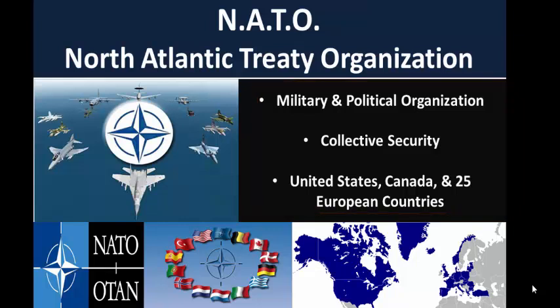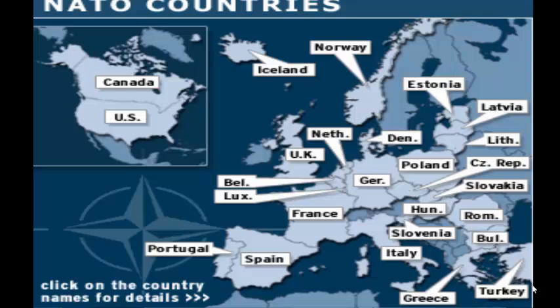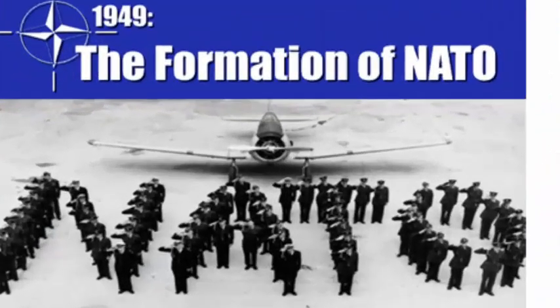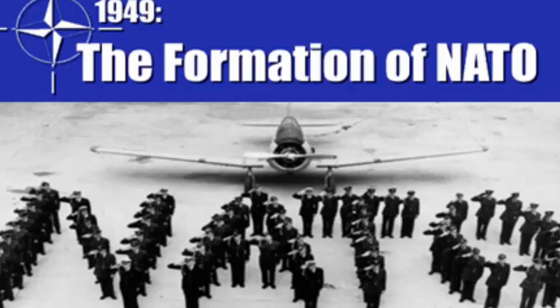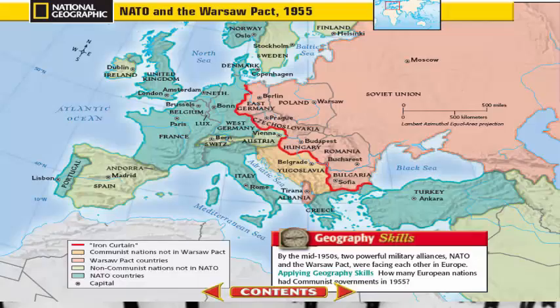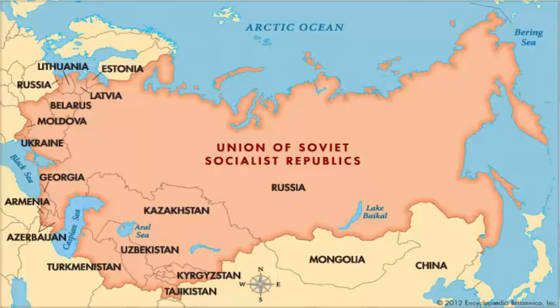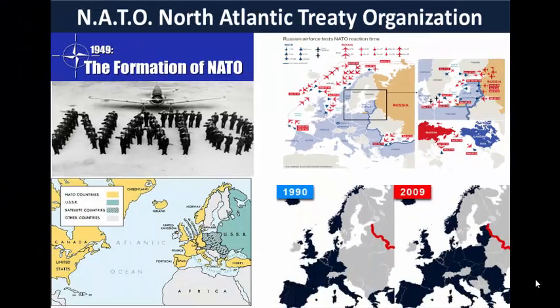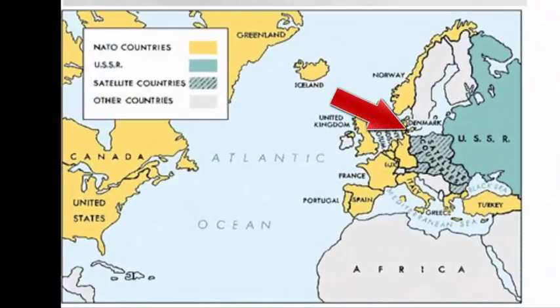We covered NATO in our last video. This treaty and international organization is based on the idea of collective security — the countries basically agree to combine their militaries and announce to the world that if a country messes with one of its members, the others will come to their defense. NATO was created after World War II at the beginning of the Cold War, mostly between the United States and their Western European allies against their new enemy, Communist Russia — now the Soviet Union. A line was drawn through Europe with NATO on one side and the Soviet Union with the countries they controlled in Eastern Europe on the other.